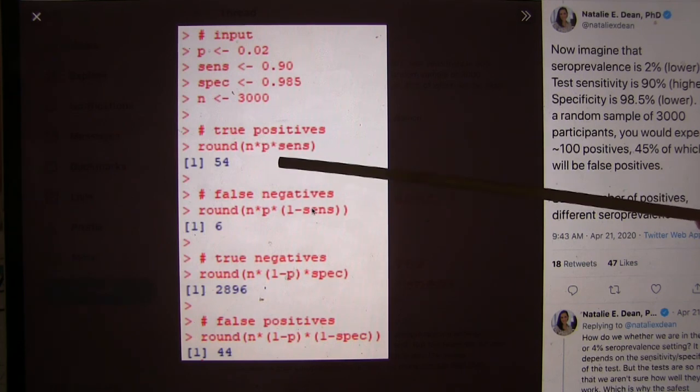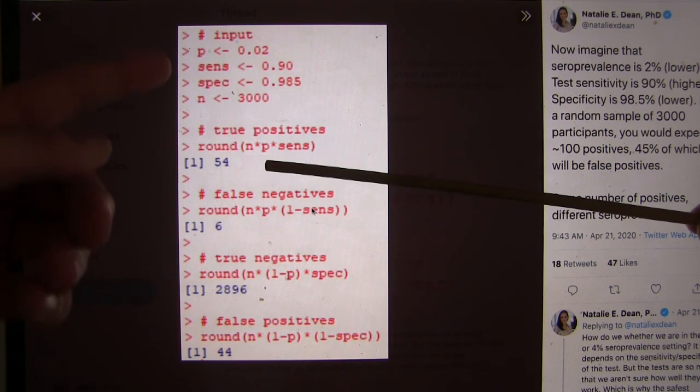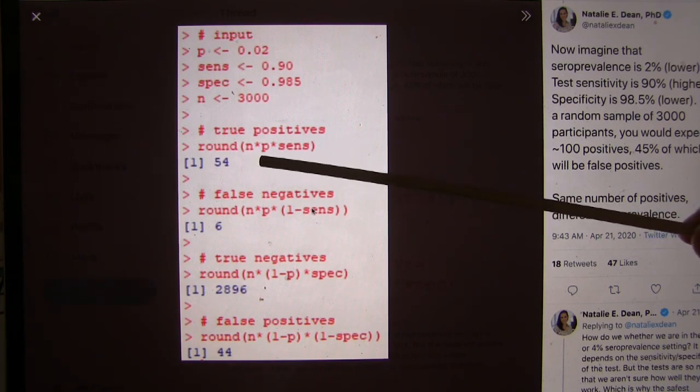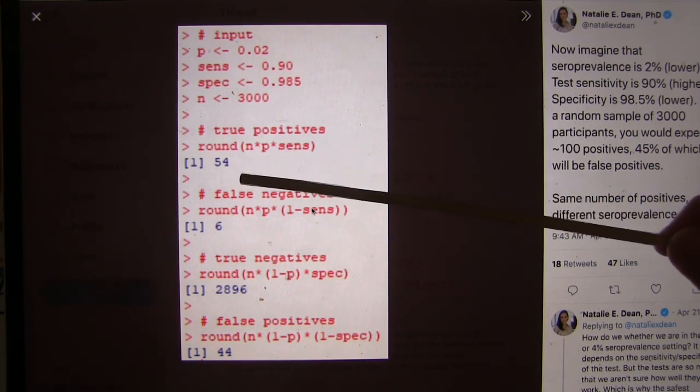So our true positives, what did we find here? We have 54, so 3,000 times we have the percent, 0.02, and the sensitivity, 0.9. So how many would we expect in the whole population to have it if our test was perfect? So we'd want 2% of the population to have it. So 60? 60, and then we have 90, we find 90% of them. So that's what takes us from 60 down to 54.